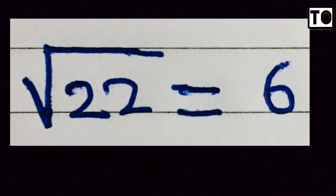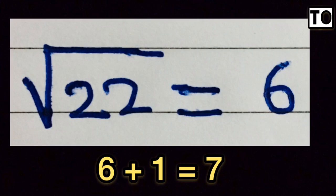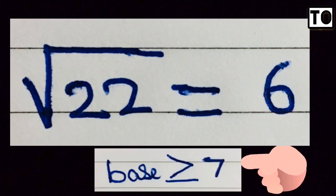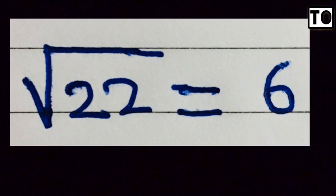If we select 6 as a digit in octal, the digit 6 is present so base must be greater than or equal to 7. The number root 22 equals 6. Since we have a digit 6, we can convert it in octal; base must be greater than or equal to 7. Here 6 plus 1 is 7.